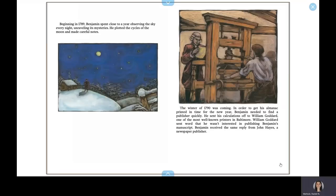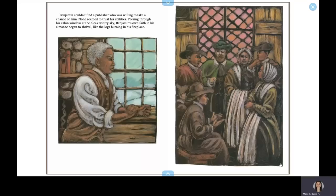Beginning in 1789, Benjamin spent close to a year observing the sky every night, unraveling its mysteries. He plotted the cycles of the moon and made careful notes. The winter of 1790 was coming. In order to get his almanac printed in time for the new year, Benjamin needed to find a publisher quickly. He sent his calculations off to William Goddard, one of the most well-known printers in Baltimore. William Goddard sent word that he wasn't interested in publishing Benjamin's manuscript. Benjamin received the same reply from John Hayes, a newspaper publisher. Benjamin couldn't find a publisher who was willing to take a chance on him. None seemed to trust his abilities.